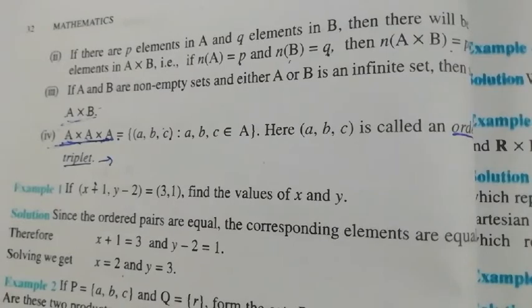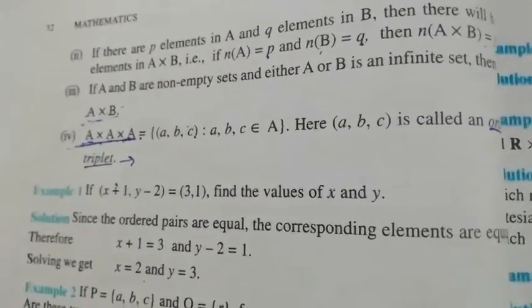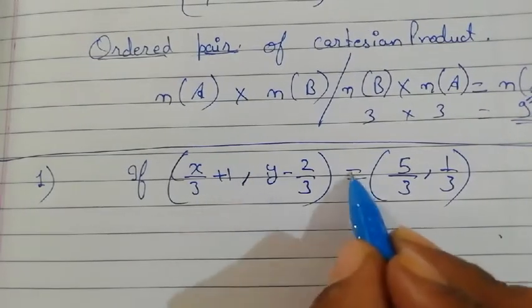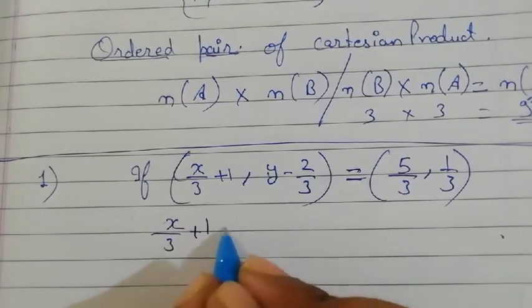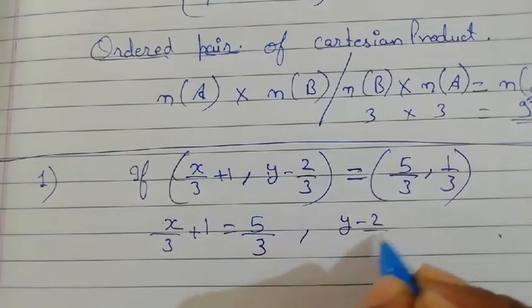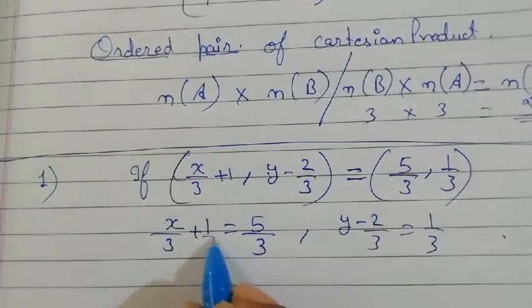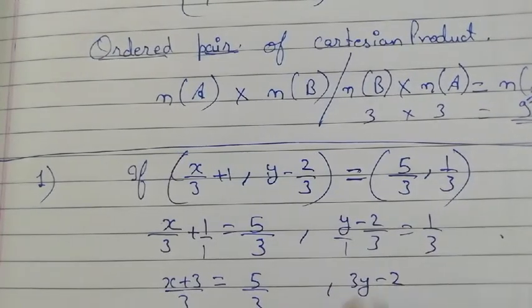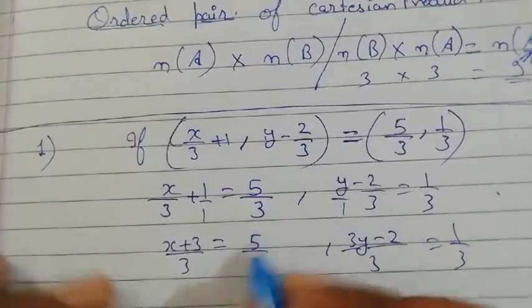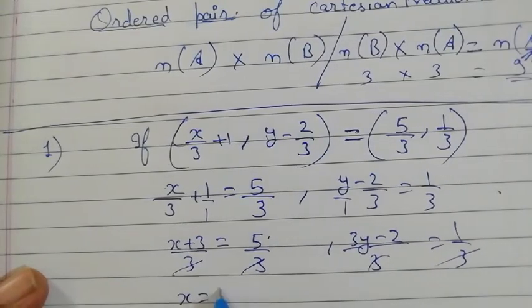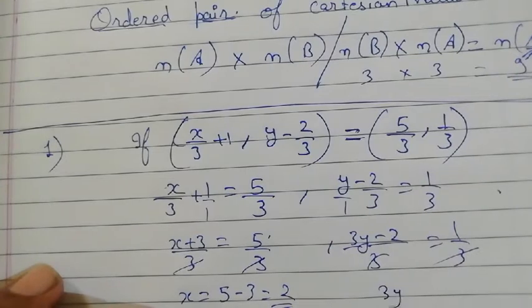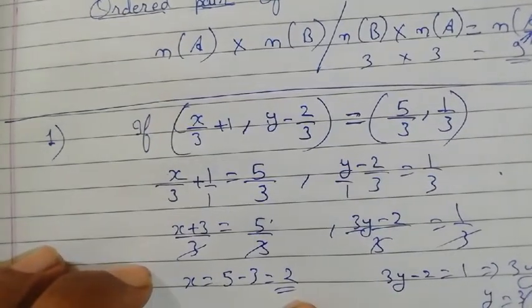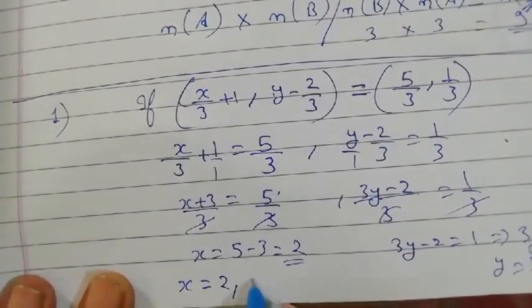Let's come to Exercise 2.1. The first question asks us to find the values of X and Y. It is given that (3+1) = (5/3) and (Y − 2/3) = (1/3). Taking LCM: (X+3)/3 = 5/3 and (3Y−2)/3 = 1/3. Cancelling the denominators: X = 5−3 = 2, and 3Y−2 = 1, so 3Y = 3, giving Y = 1. So X = 2 and Y = 1.